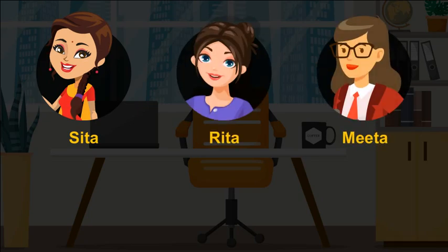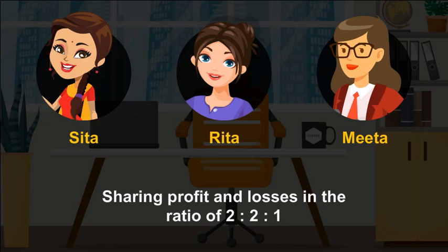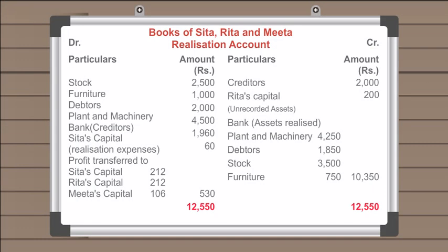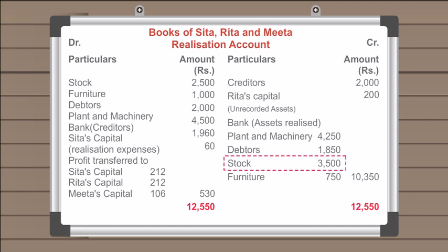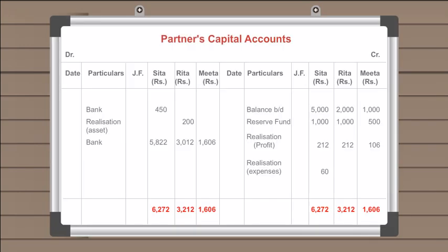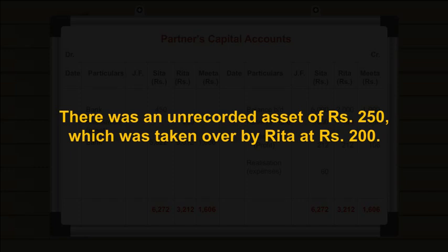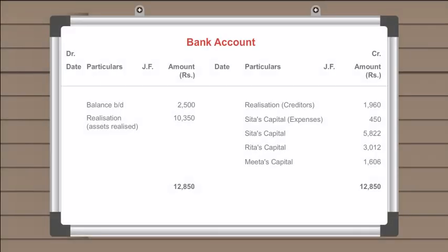The balance is paid to partners whose capital accounts show a credit balance, and the following entry is recorded. Example: Sita, Rita, and Meeta are partners sharing profits and losses in a ratio of 2:2:1. Their balance sheet as on March 31st, 2007 is provided. They decide to dissolve the business. The following amounts were realized: Plant and machinery – Rs. 4,250; Stock – Rs. 3,500; and Debtors – Rs. 750. Sita agreed to bear all realization expenses; for this service, Sita is paid Rs. 60. Actual expenses on realization amounted to Rs. 450. Creditors paid 2% less. There was an unrecorded asset of Rs. 250 which was taken over by Rita at Rs. 200. Prepare the necessary accounts to close the books of the firm.